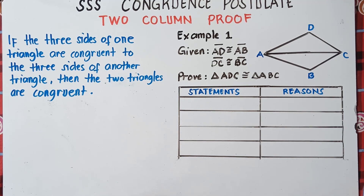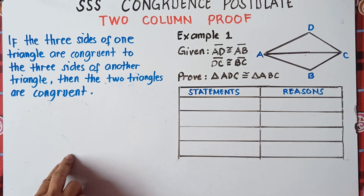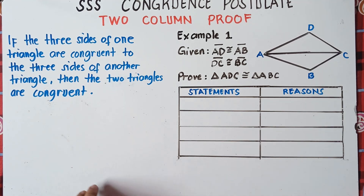Now before answering our first example, we need to define first what we mean by the SSS postulate. The SSS postulate states: if the three sides of one triangle are congruent to the other three sides of another triangle, then the two triangles are congruent.